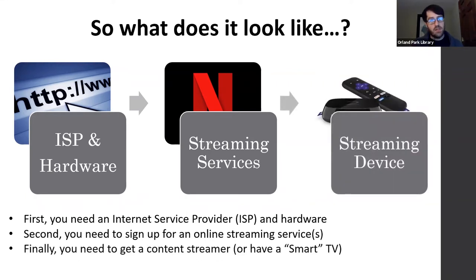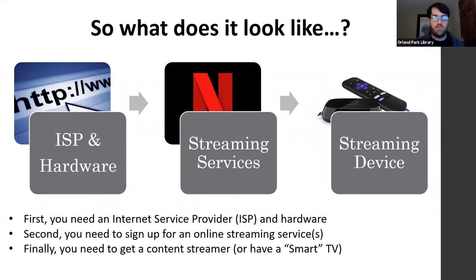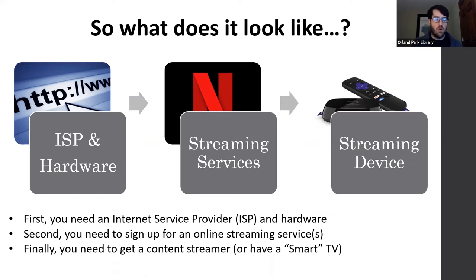You may or may not need a streaming device. If you have a smart TV, chances are you can use that TV to access a lot of streaming services. But if you don't, you can get a content streamer. Some of the big ones are Roku, which is very popular — I have a couple of Rokus in my house. Google has Chromecast, and Amazon has a whole line like the Fire Stick. If your smart TV is older and moves slow, you may want to invest in a streaming device.